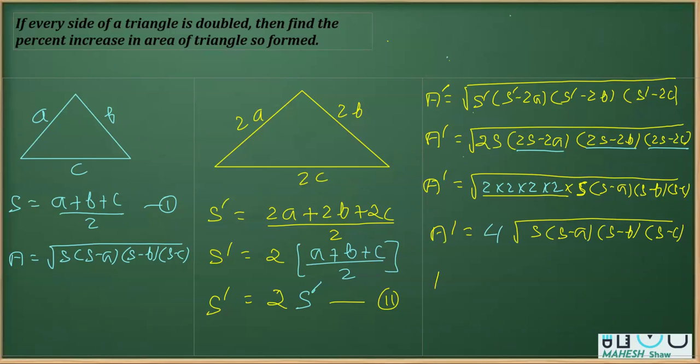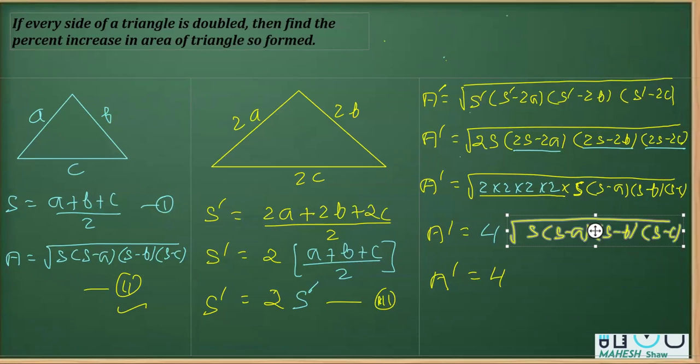Now, check again. We have this as A dash is equal to 4 times. From this equation, say I marked it. I can mark it, say 2. Let's make it 3. As it has occurred earlier. I can replace this whole thing. Let me show you. This whole quantity can be replaced from A. From this equation 2, as you can see here. Here, this is S, S minus A, S minus B is equal to A here. So I can replace this as 4A.